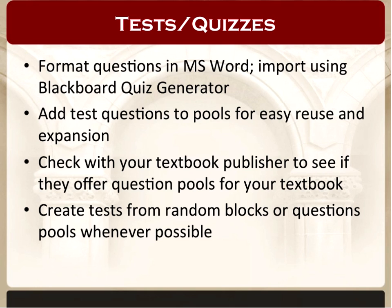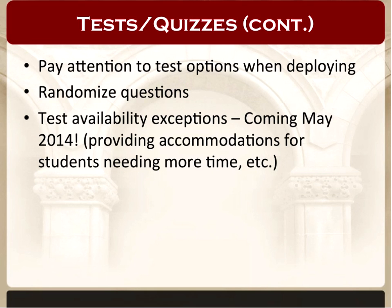I recommend creating tests from random blocks of questions and pools — it gives you many options for dynamically changing tests over time. When you deploy a test in Blackboard, pay attention to the test options: how long do students have, and other parameters. You may also want to randomize the question order. Even if you don't use a pool and all students get the same ten questions, you can randomize them so each student receives questions in a different order.